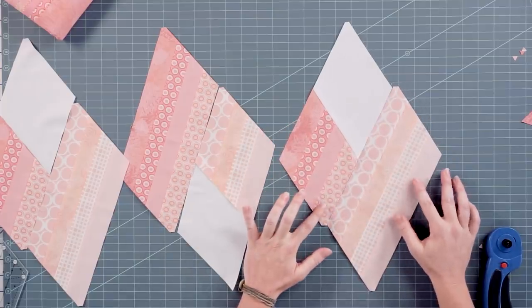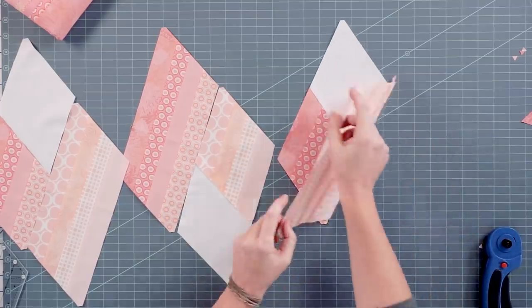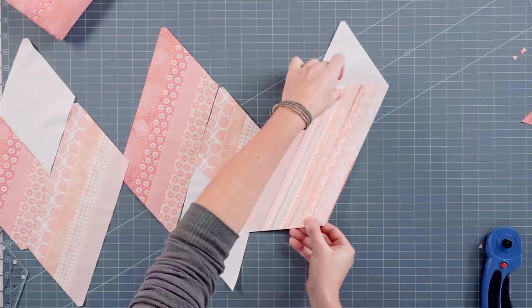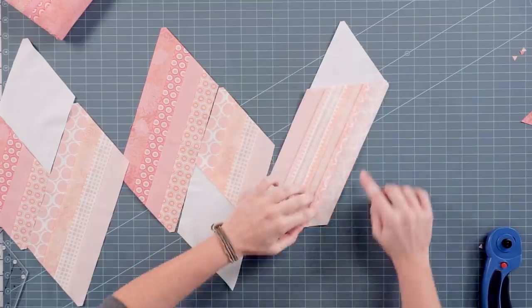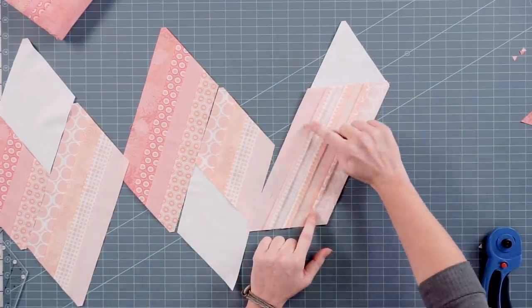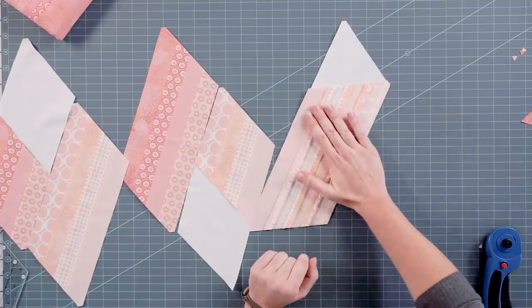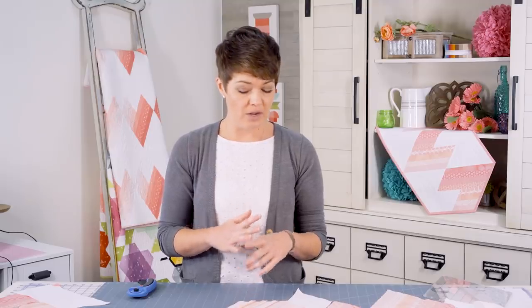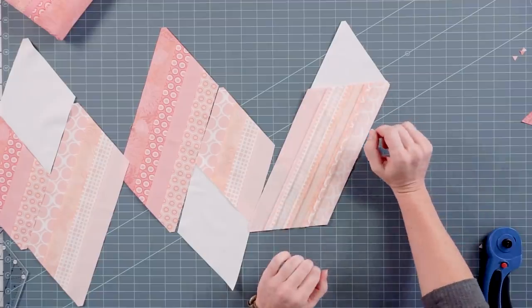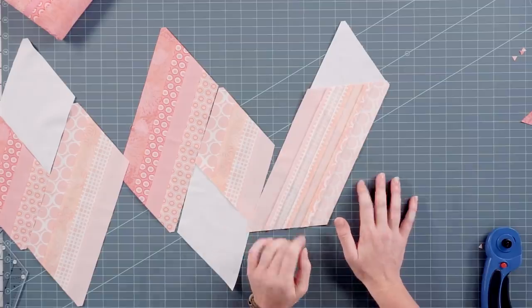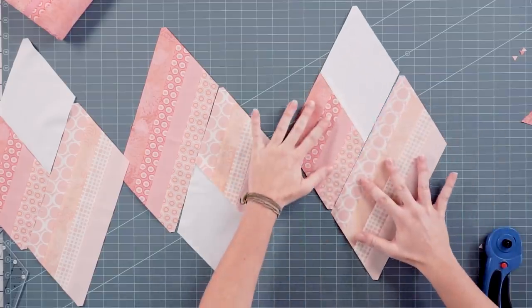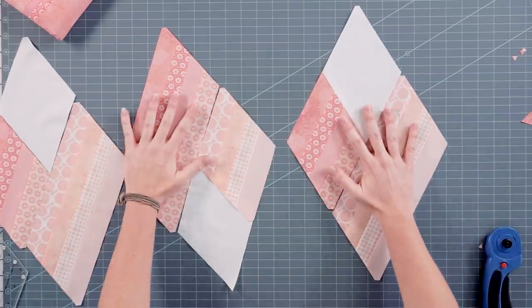Here we have some sewn together, that seam just like that. Notice I pressed all my strip sets open. That makes for a really flat block. And when you're sewing angles, a lot of times the seams don't necessarily nest. They'll criss-cross. And so if your seams are pressed open, they criss-cross way easier. So it'll be just like that, five times over.